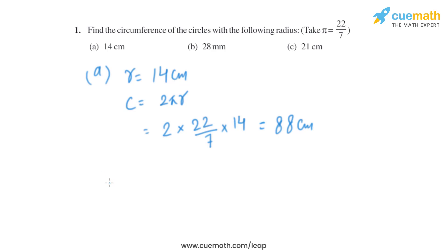So that will be the circumference for part A. Now let's move on to part B. The radius given is 28 millimeter. We know the formula of circumference is 2πr. Let's put the value of radius, so it will become 2 × 22/7 × 28. The final answer after solving this we will get